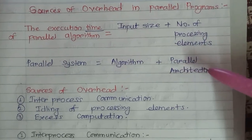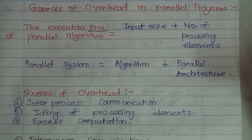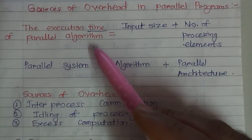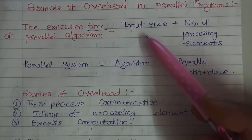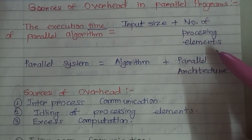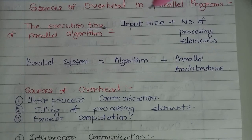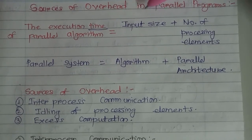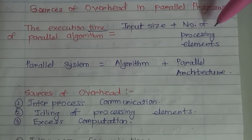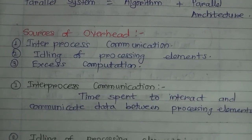The execution time of a parallel algorithm is equal to a function of the input size of the problem statement plus the number of processing elements being used. So the execution time of a parallel algorithm depends not only on input size but also on the number of processing elements.